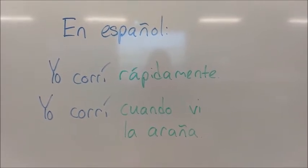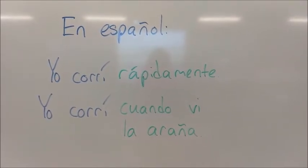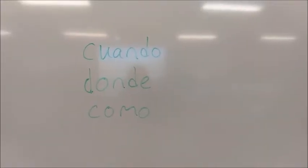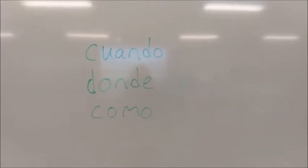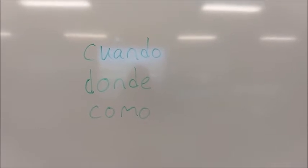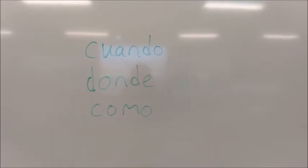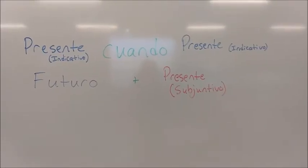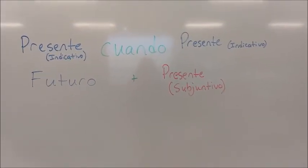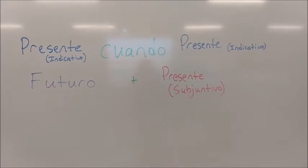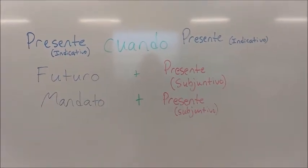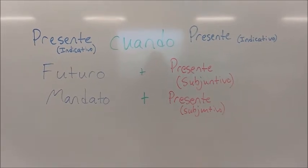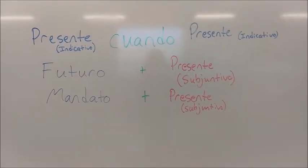The adverbial clause that replaces the adverb is 'cuando vi la araña.' In Spanish, there are three words that usually indicate an adverbial clause: cuando, donde, and como. When the start of your sentence is in the future tense, your adverbial clause will take the present subjunctive. Similarly, when you have a command at the front of your sentence, your adverbial clause will also take the present subjunctive.